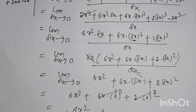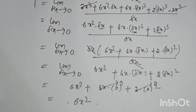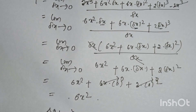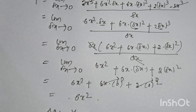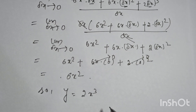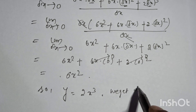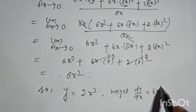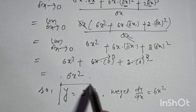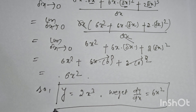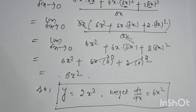So, for y equal to 2x cubed, we get dy/dx is equal to 6x squared. Thank you for watching my channel — please like, subscribe, share, and comment. Thank you.